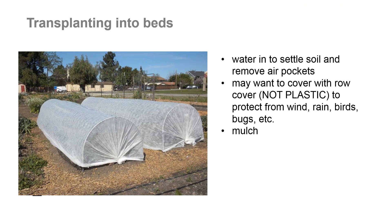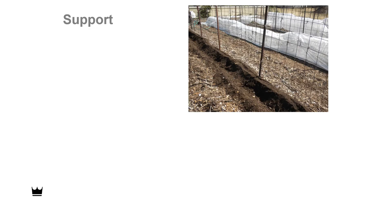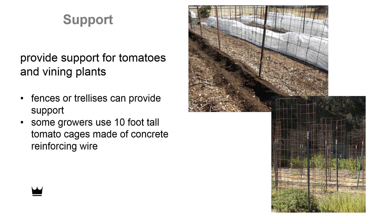After we put our transplants in the garden soil, we want to water them in to settle the soil and remove air pockets. We may want to cover them with a row cover — not plastic — which will help protect the transplants from wind, harsh sun, rain, birds, bugs, and so on. It's a good idea also to mulch our transplants to help retain soil moisture. Some plants need support, such as tomatoes or vining crops. Tomatoes in good soil can grow 10 feet high and need sturdy cages for support — we could use fences, trellises, or tomato cages made out of concrete reinforcing wire.